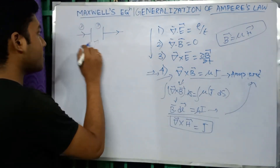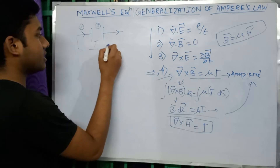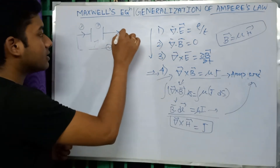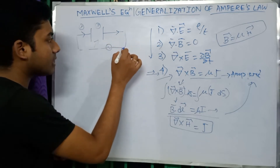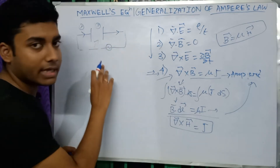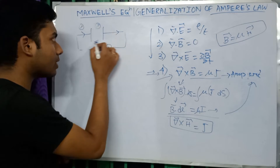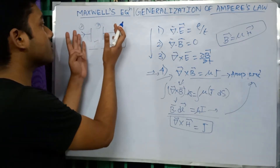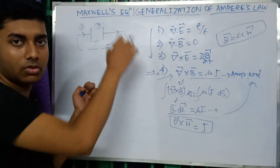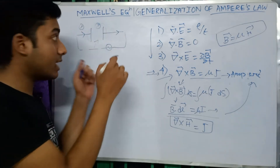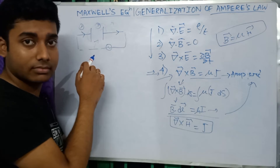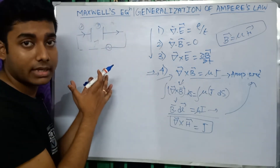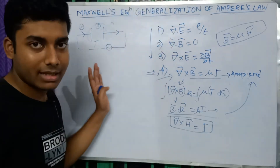Yet experimentally, the magnetic needle deflects even in the gap region between the capacitor plates. This means there must be a magnetic field there. But we know a magnetic field is generated by a steady current, and here there is no steady current. So why is a magnetic field generated here? Also, the circuit has a discontinuity in the gap — there must be some current connecting the circuit across that gap.